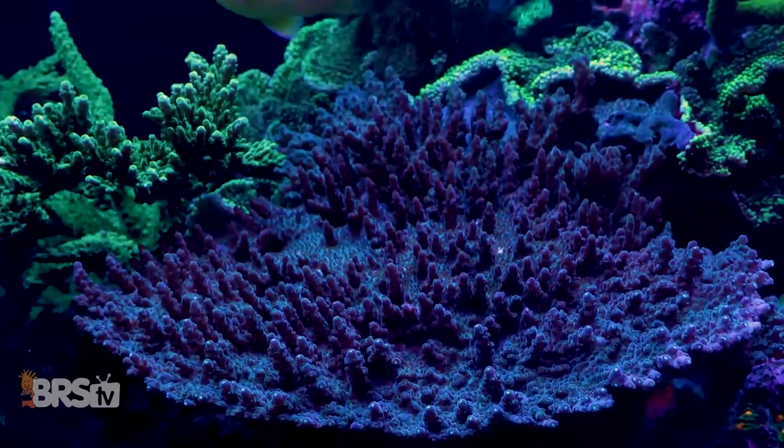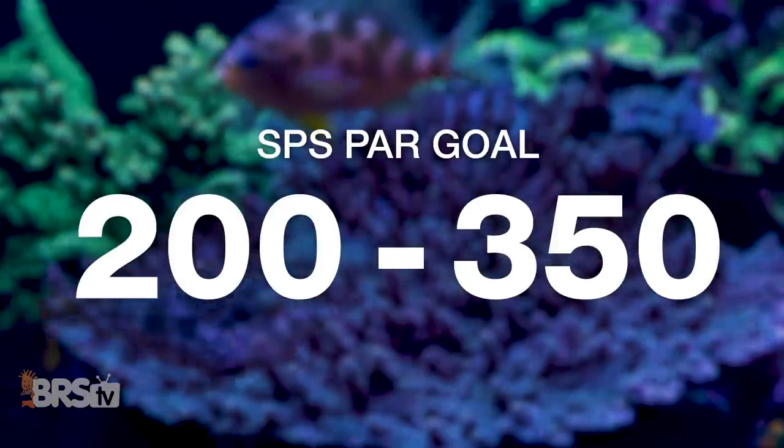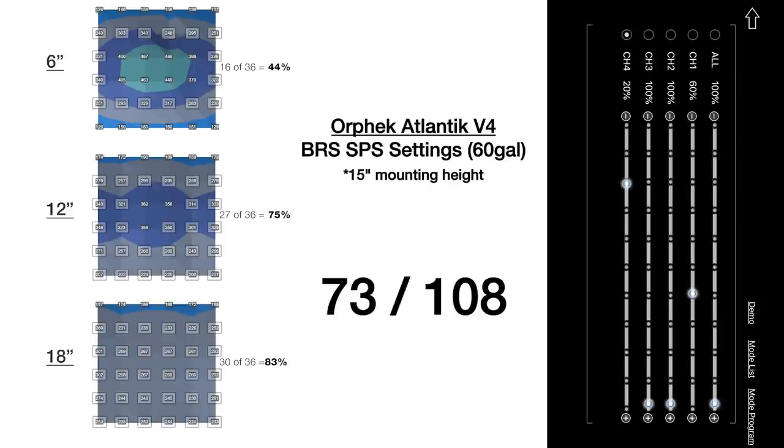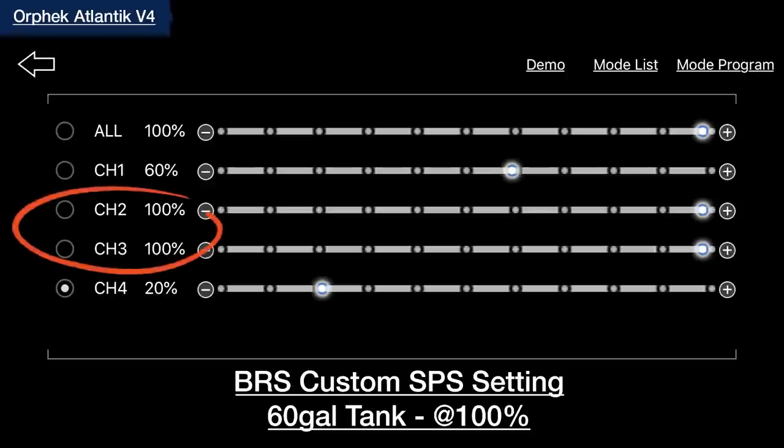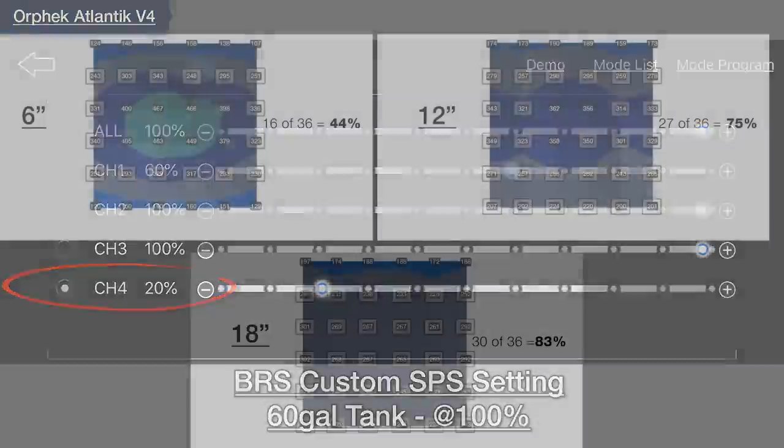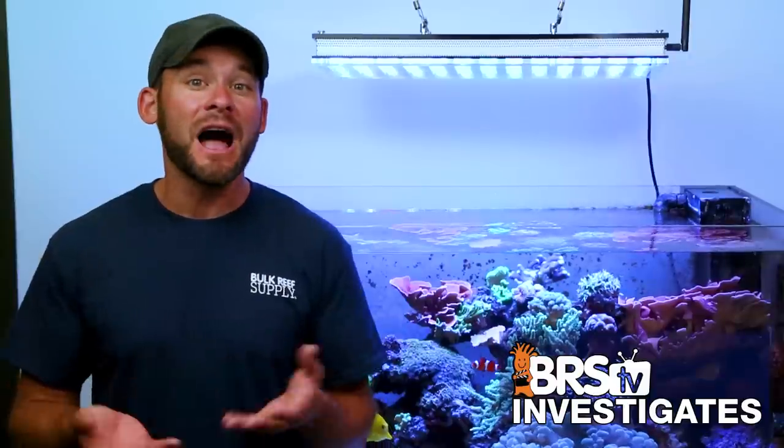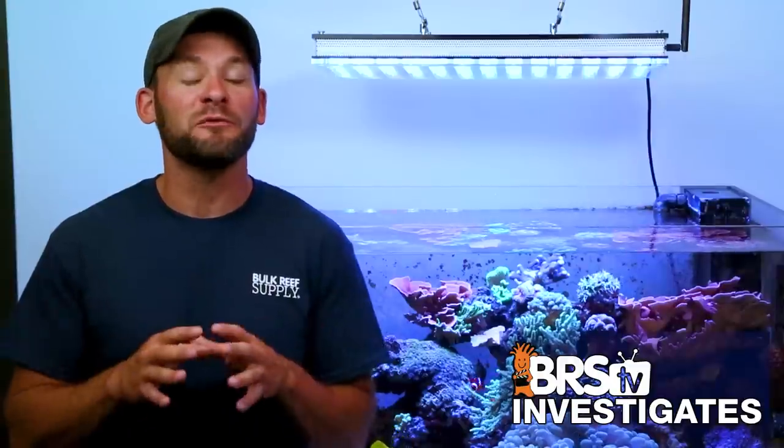Next up in our 60-gallon testing area, we targeted those SPS dominated PAR goal ranges of 200 to 350, where we tested 68% or 73 out of 108 data points in the top, middle, and bottom of the tank with our recommended spectrum ratio mix set to max with channel two and three at 100%, channel one at 60, and channel four at 20%. As you can see, these settings perform very well at 12 and 18 inches deep in the tank, yet remains a little on the warm side in the top six inches, which can be improved by raising the light a little higher off the top of the tank, keeping in mind that doing so will result in slightly more efficiency loss.